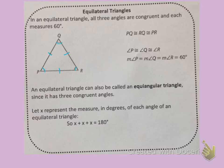So in this triangle, we have angle P, angle Q, and angle R, and they are each congruent to one another. And because the sum of all of the angles inside of a triangle is 180 degrees, each of those angles — P, Q, and R — are 60 degrees.